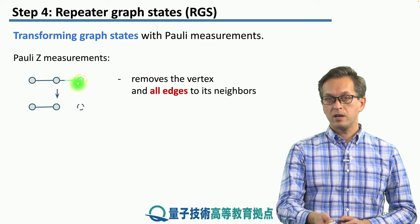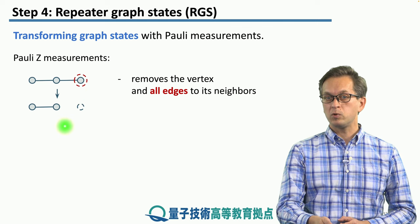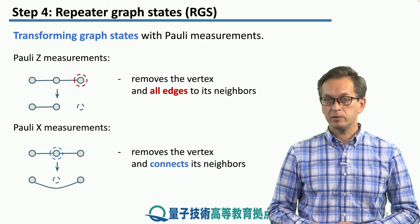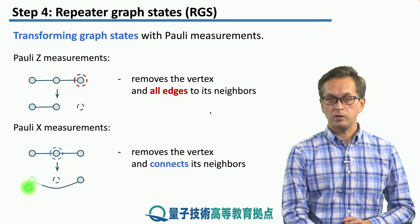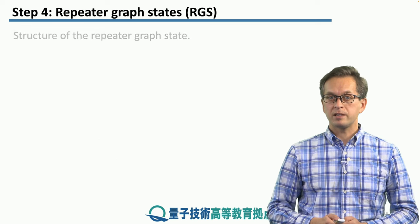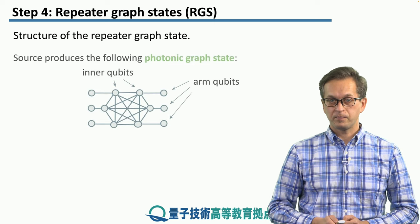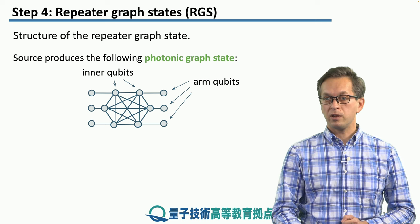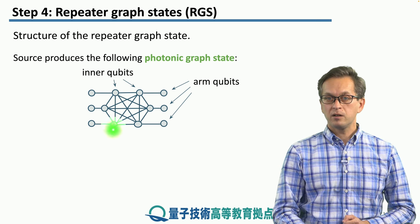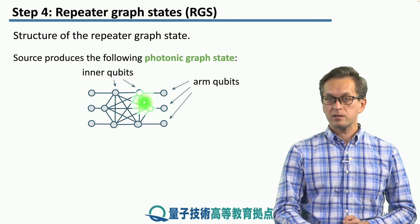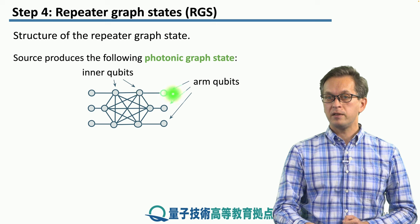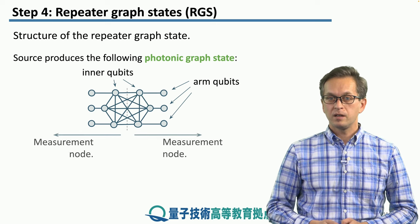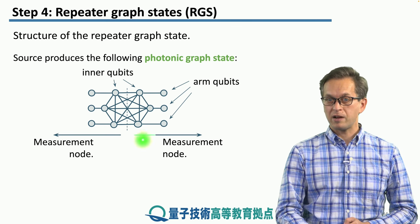For example, with three qubits, if we measure one qubit in the Z basis, we end up with the following two-qubit graph state. For a Pauli X measurement, we also remove the qubit, but this time we don't break all the edges to its neighbors — instead, we create a bridge between the neighboring qubits. Now let's get back to the structure of a repeater graph state. Every source must produce the following structure: here we've got 12 qubits in total. The inner qubits form what's known as a completely connected graph, or complete graph, and each inner qubit has one neighbor — we call these arm qubits.